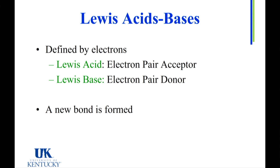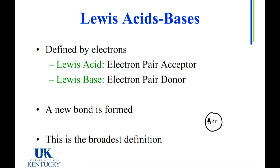Before we get into looking at examples, I want to talk a little bit about how this is the broadest definition of all. The inner circle is the most narrow definition — this is the Arrhenius definition. In the Arrhenius definition, we had to place the acid or the base into water, and we defined the acid by how it behaved in water, so it's very limiting. We went a little further out from there, and we defined Bronsted-Lowry acids and bases, which looked at it in terms of proton donating and proton accepting. It doesn't need the water, so you can include a whole lot more things in this definition.